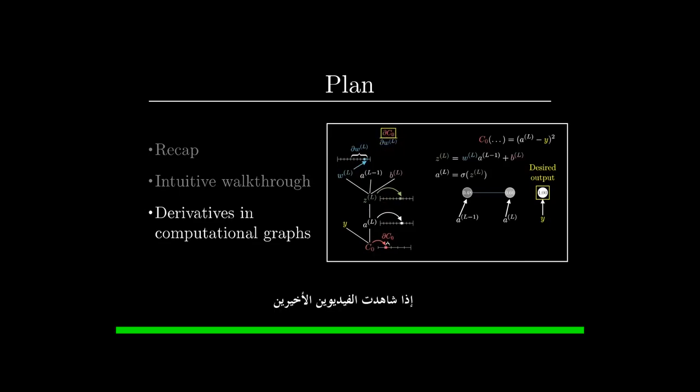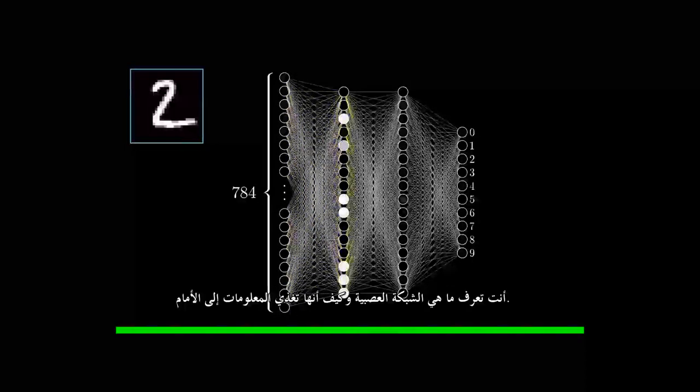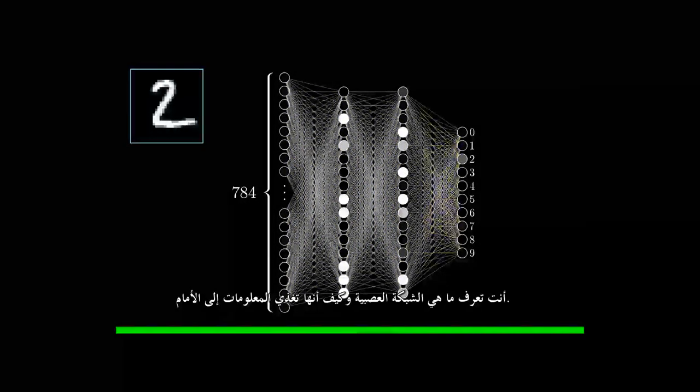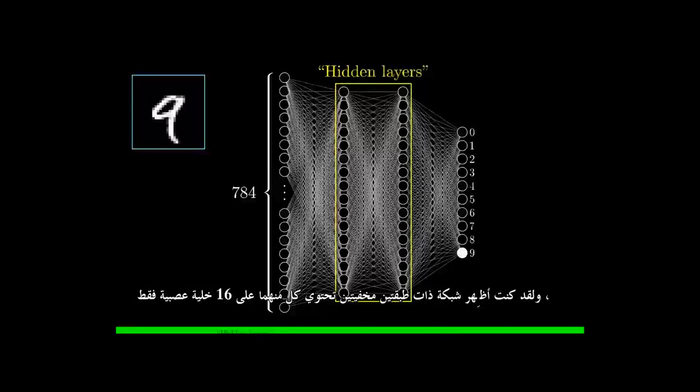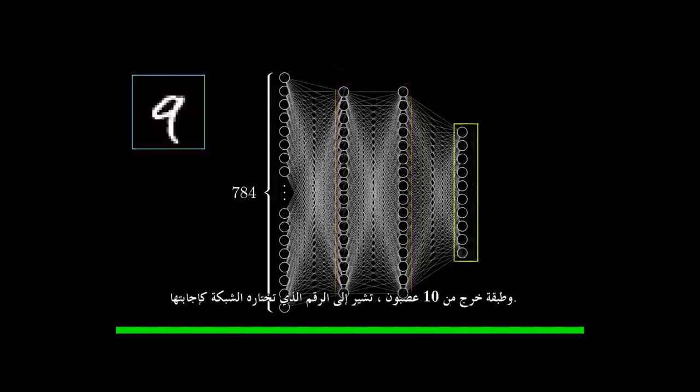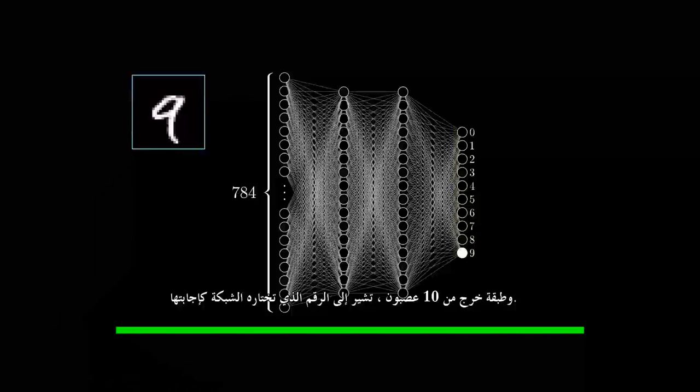If you watched the last two videos, or if you're just jumping in with the appropriate background, you know what a neural network is and how it feeds forward information. Here, we're doing the classic example of recognizing handwritten digits, whose pixel values get fed into the first layer of the network with 784 neurons, and I've been showing a network with two hidden layers having just 16 neurons each, and an output layer of 10 neurons, indicating which digit the network is choosing as its answer.